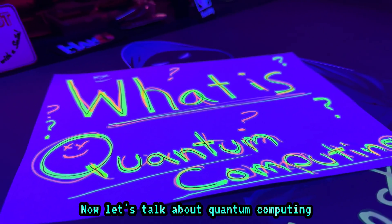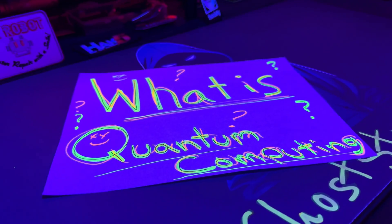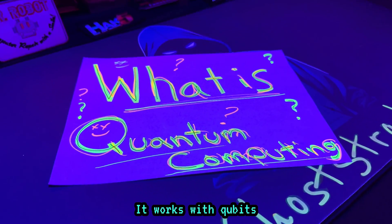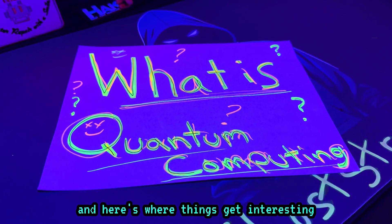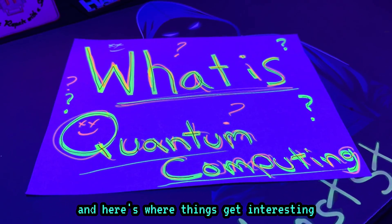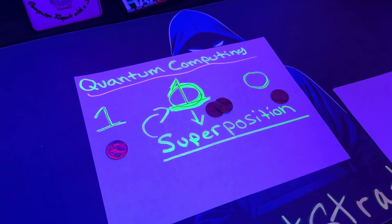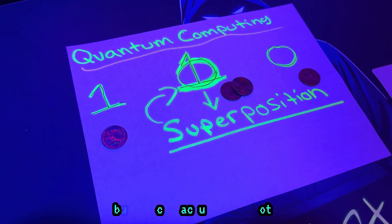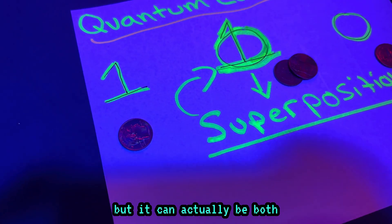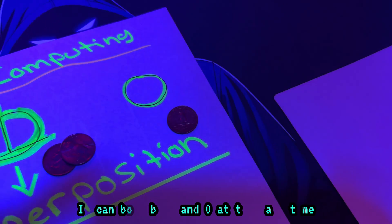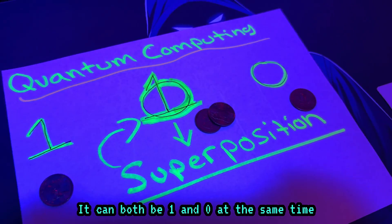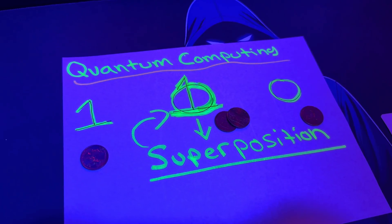Now let's talk about quantum computing. It works with qubits, and here's where things get interesting. A qubit is just like a one or a zero, but it can actually be both — it can be one and zero at the same time.